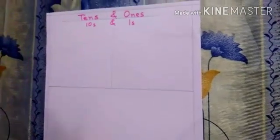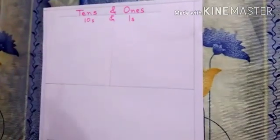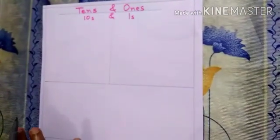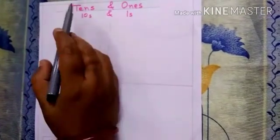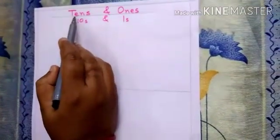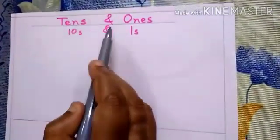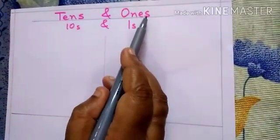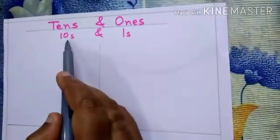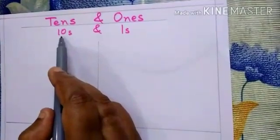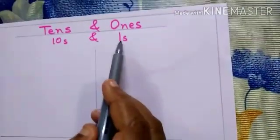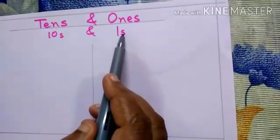Hello children, today we will learn the concept of tens and ones — TENS and ONES. We can write it in this way also: 10s and 1s.